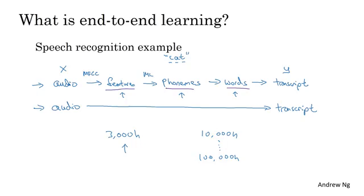And if you have a medium amount of data, then there are also intermediate approaches where maybe you input audio and bypass the features and just learn to output the phonemes of the neural network and then have some other stages as well. So this would be a step toward end-to-end learning, but not all the way there.